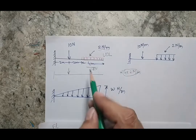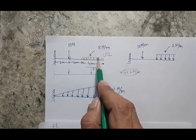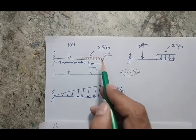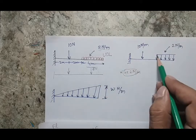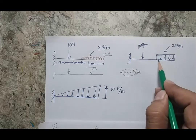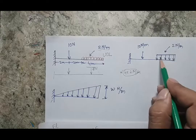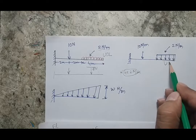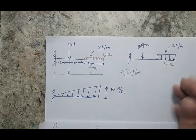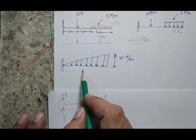In some books you may find a corrugated-type representation of UDL, and in others a different representation — but both indicate the same uniformly distributed load.